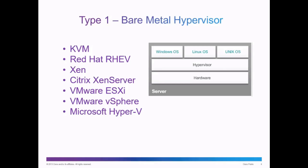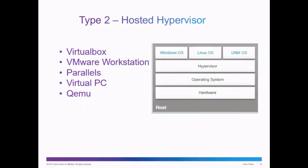There are different types of Type 1 hypervisors. A Type 2 hypervisor is known as a hosted hypervisor. In this situation, the hypervisor is an application or program that is installed on top of the host operating system. In other words, you install the hypervisor — like VirtualBox, VMware Workstation, or Parallels Virtual PC — on top of the host computer. You install VirtualBox, let's say, on top of the Windows operating system, and then you can create virtual computers.